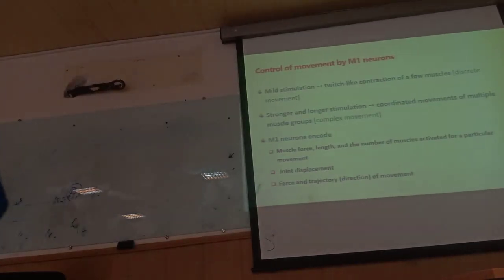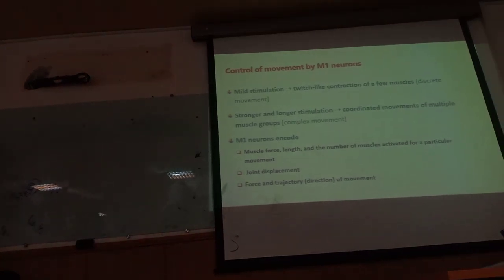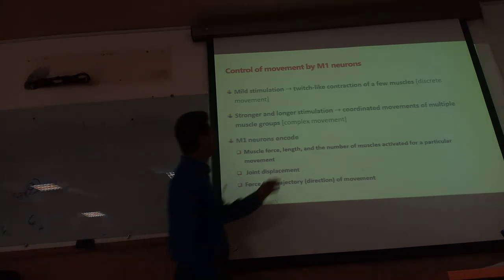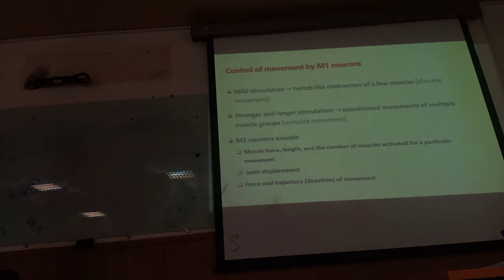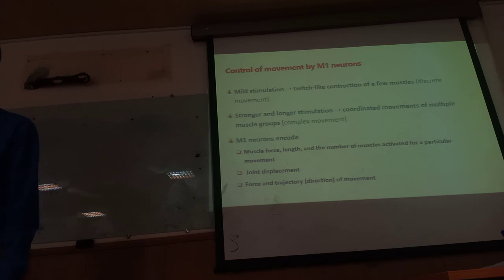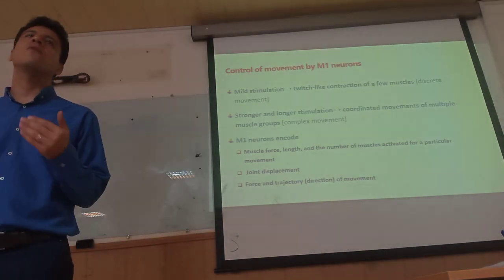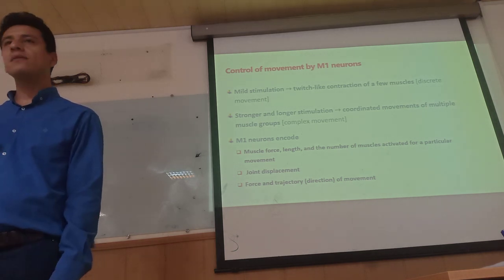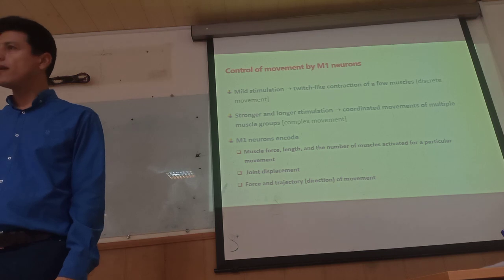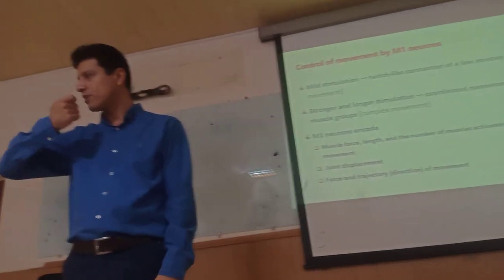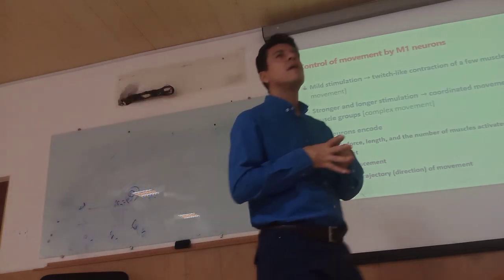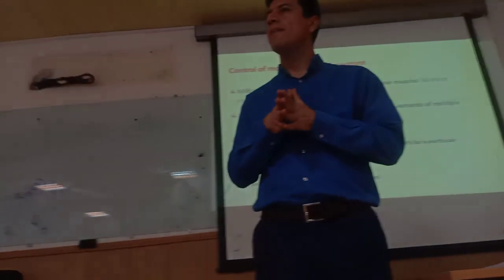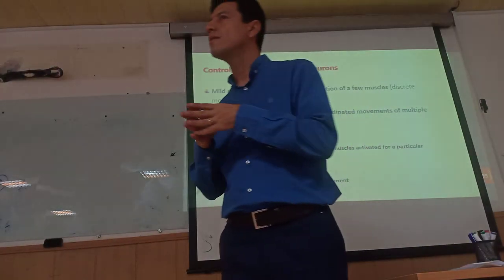Stimulation in the motor cortex causes contraction of a few muscles — we call these discrete movements. Stronger and longer stimulation causes coordinated movements of multiple muscles, or complex movements. A complex movement involves several joints. A simple or discrete movement involves only one joint. The primary motor cortex is able to do both discrete and complex movements. Neurons in the primary motor cortex determine the force of muscle contraction, the length of the muscle, the number of muscles activated, the pattern of muscle activity, joint displacement, force, and the trajectory or direction of the movement.